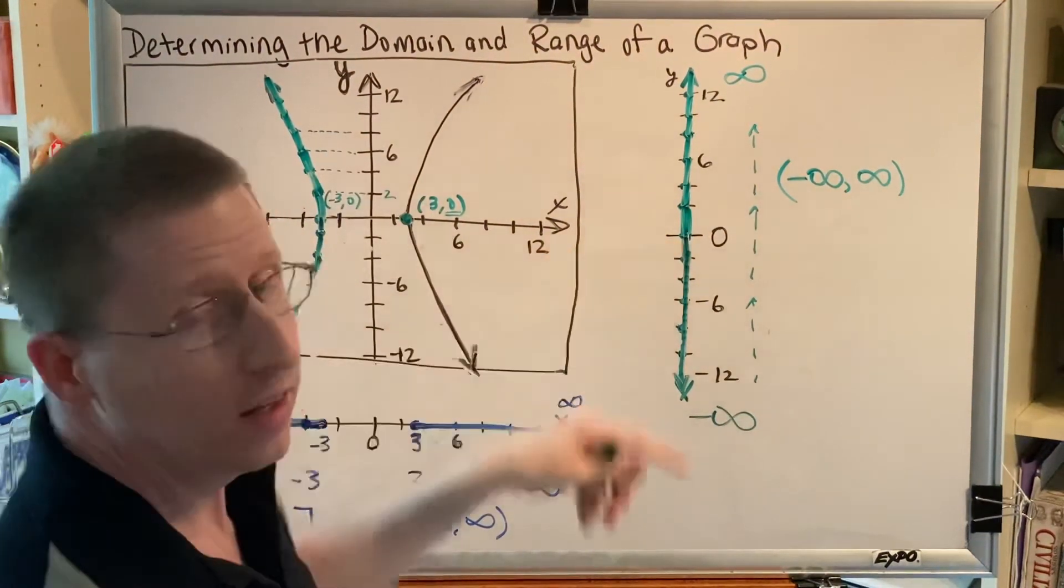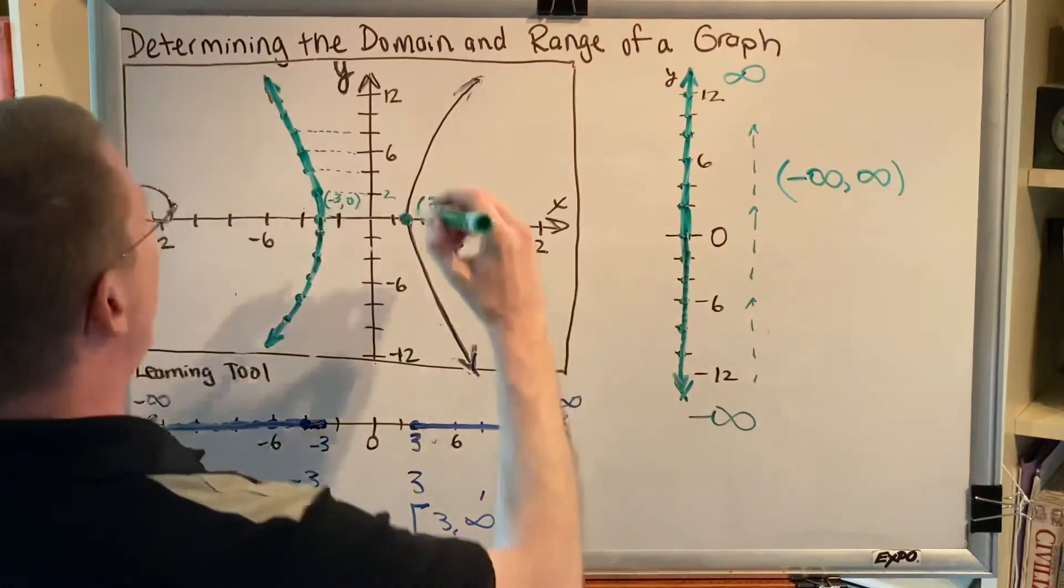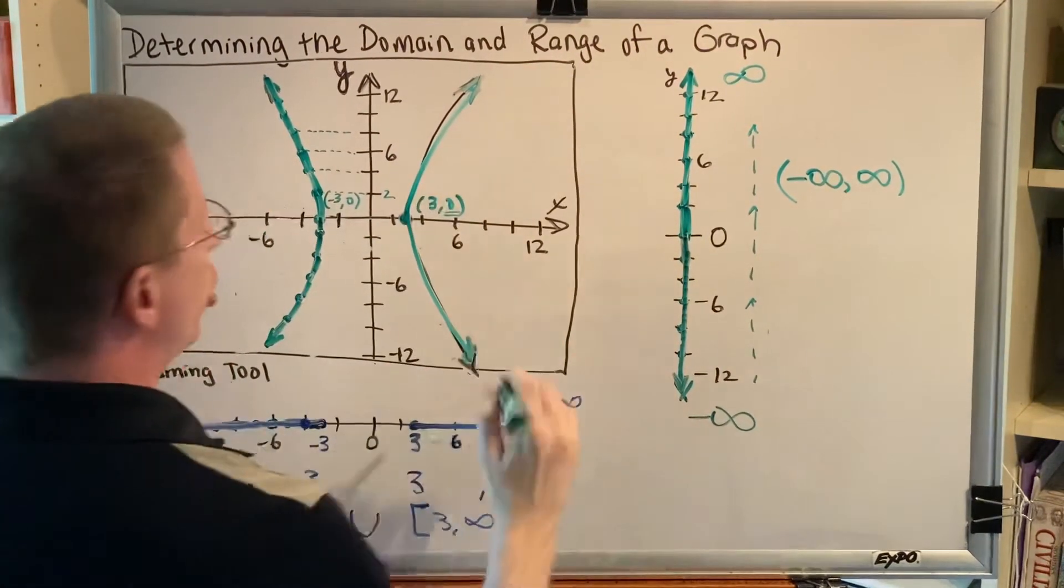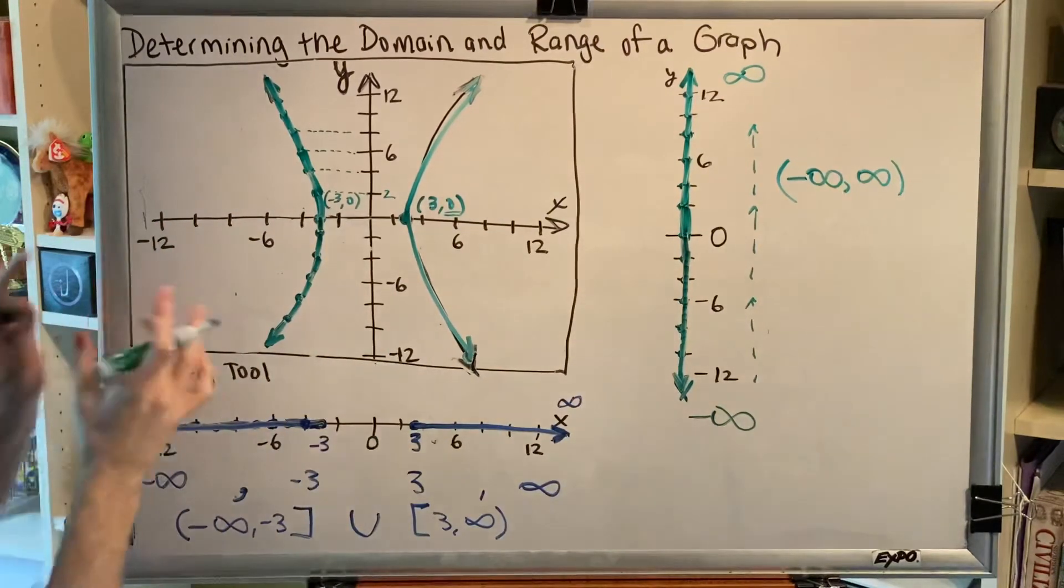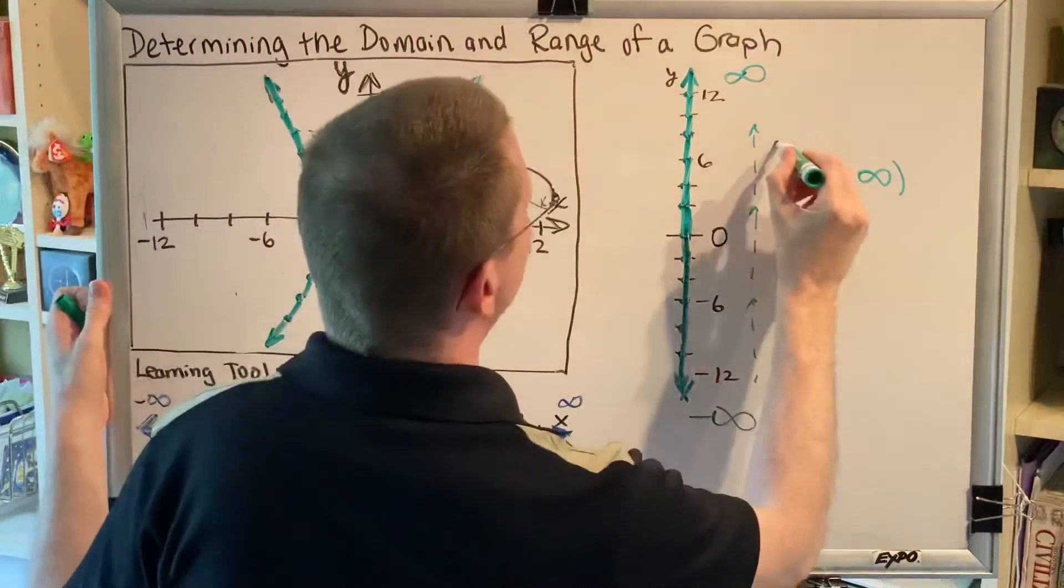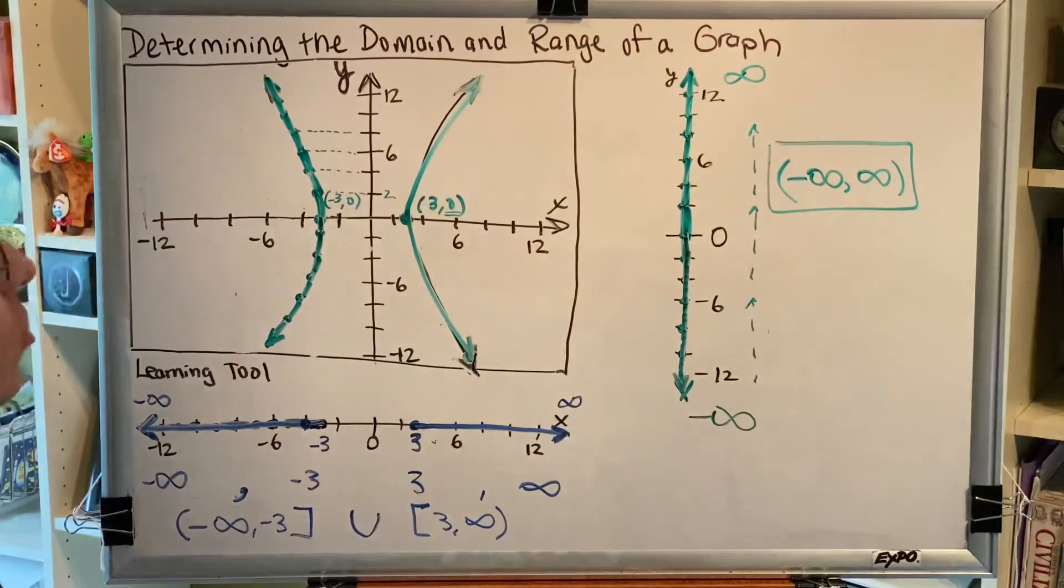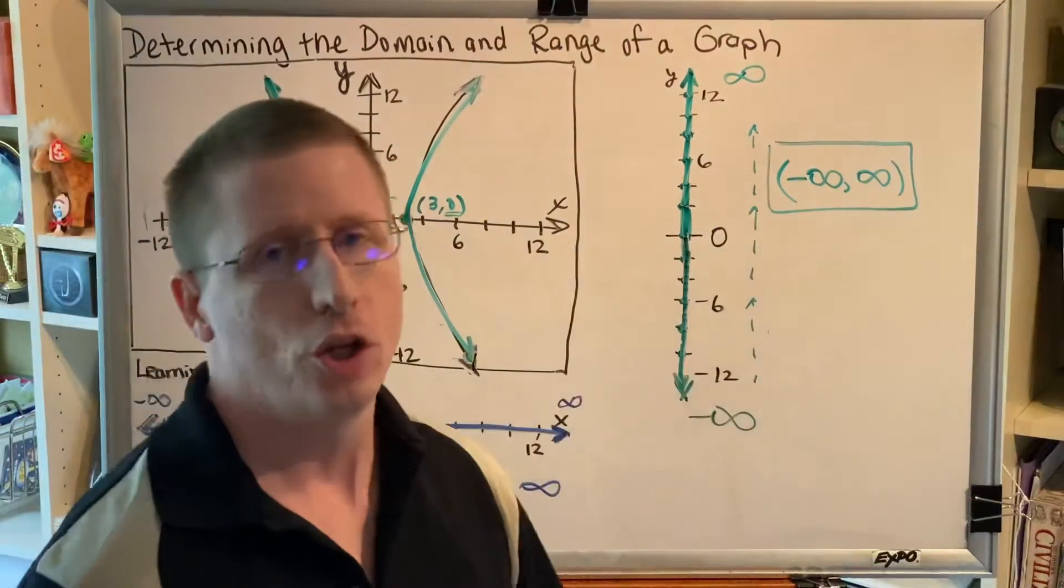In fact, every number in the world is already shaded. So anything we get from the right half of this graph would just be a duplicate of something that we already got from the left graph. This tells us that our final answer for the range is negative infinity to infinity.